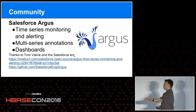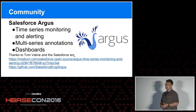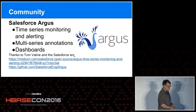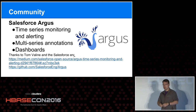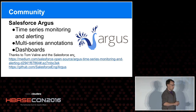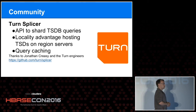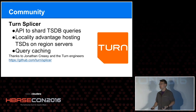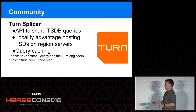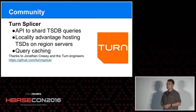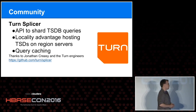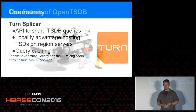Some updates on the community: the Argus team released Argus time series monitoring - thanks to those guys for their talk and for working on it. There's a link to Tom's post about Argus and how it works. Also, the guys at TURN - one of the drawbacks in TSB right now is that if you issue a query, it goes to one TSD and that TSD has to do all the work. The folks at TURN built a quick application on top called Splicer that splices those queries, shards them out to multiple TSDs, and brings them back. Thanks to Jonathan Creasy and the TURN engineers for that. You can find it on GitHub if you want to play around with it.